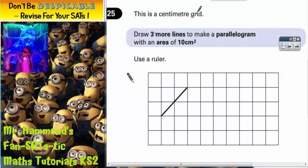Question 25. This is the last question on the paper. So it is a level 5 question. Let's have a look at what we've got to do. It says, this is a centimetre grid. Draw three more lines to make a parallelogram with an area of 10 centimetres squared.